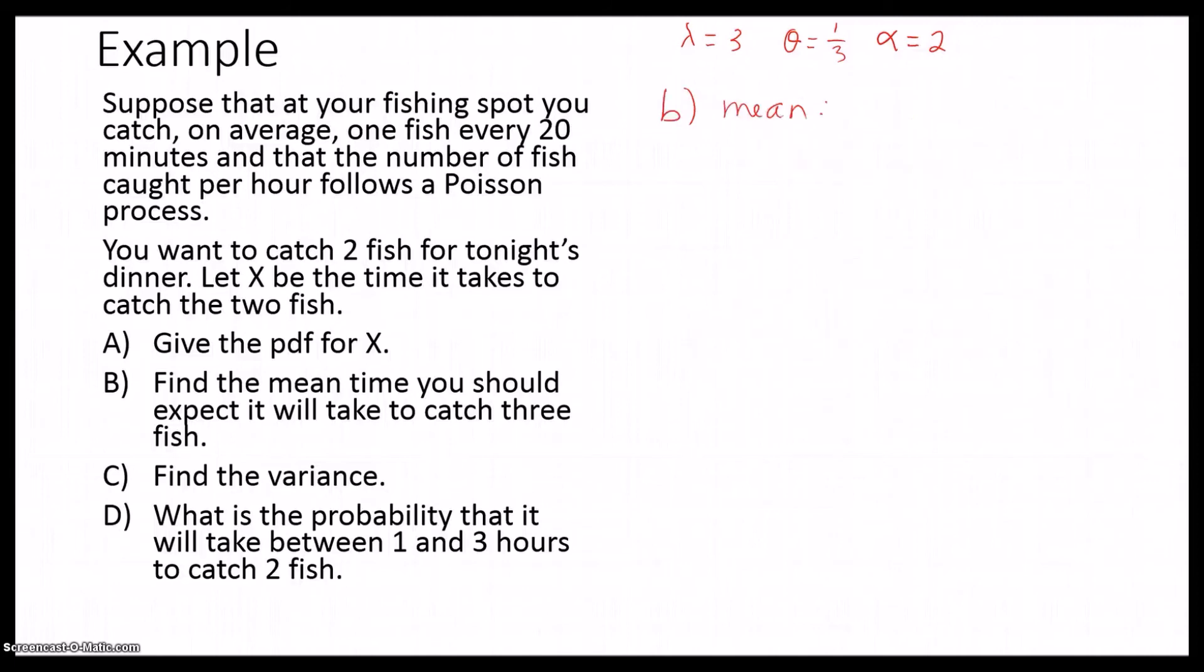Now, part B. We're going to find the mean time we should expect it will take to catch two fish. We know that the mean is equal to α times θ. Since α equals 2 and θ equals 1/3, we multiply those together. Give us a mean of 2/3 or about 0.6667.